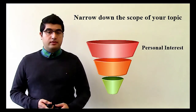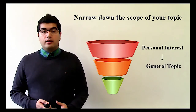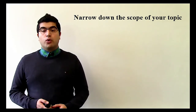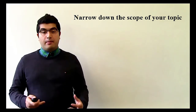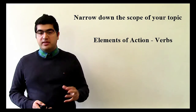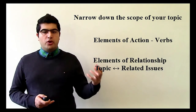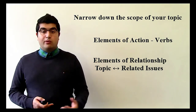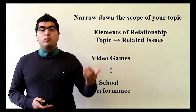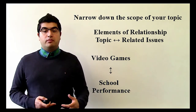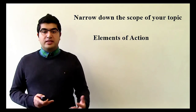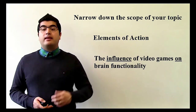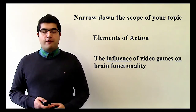For example, you like video games — fair enough, you can write about it. But this is too broad. What about video games would you like to focus on? One suggestion is to add more words to your topic to make it more dynamic. Think of elements of action, like verbs, and elements of relationship between your topic and related issues. You can explore the relationship between video games and school performance, or between video games and brain function. The element of action you can insert here is the verb 'influence,' like the influence of playing video games on brain functionality.